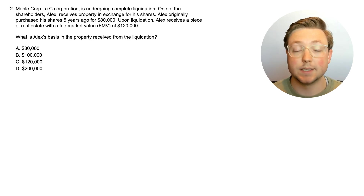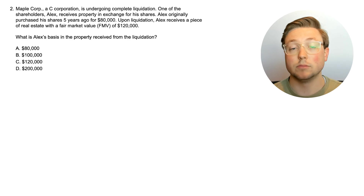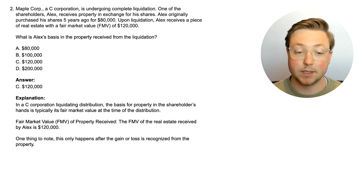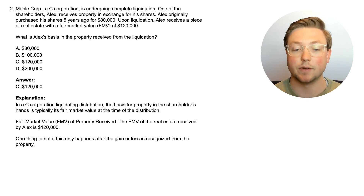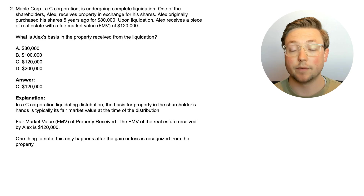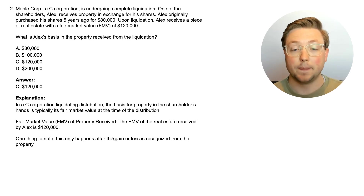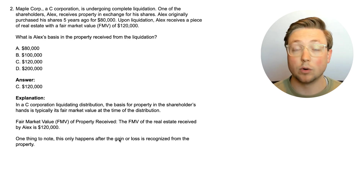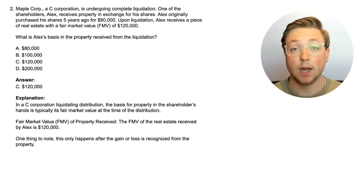In this case we're trying to figure out what the basis is in the property received from the liquidation. The answer is $120,000. In a C corporation liquidating distribution, the basis for property in the shareholder's hands is typically its fair market value at the time of distribution. One important thing to note: the recognition of gain or loss happens first, and then the basis of the property is realized in the shareholder's hands.